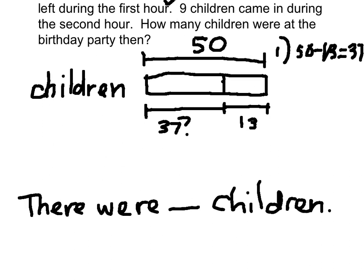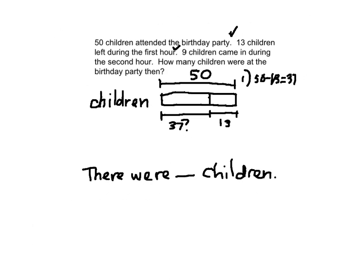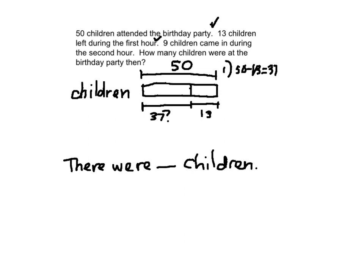There were 50 children who attended the birthday party, 13 children left during the first hour — as of now we have 37 children. That is this bar right here, from here to here. So I'm going to redraw just this 37 right here. I just don't have enough space, so I'm going to put it right here. From here to here is 37 — that same 37 that's right there. Every time you have an empty part or an empty line segment, you're going to want to solve it with a number sentence.